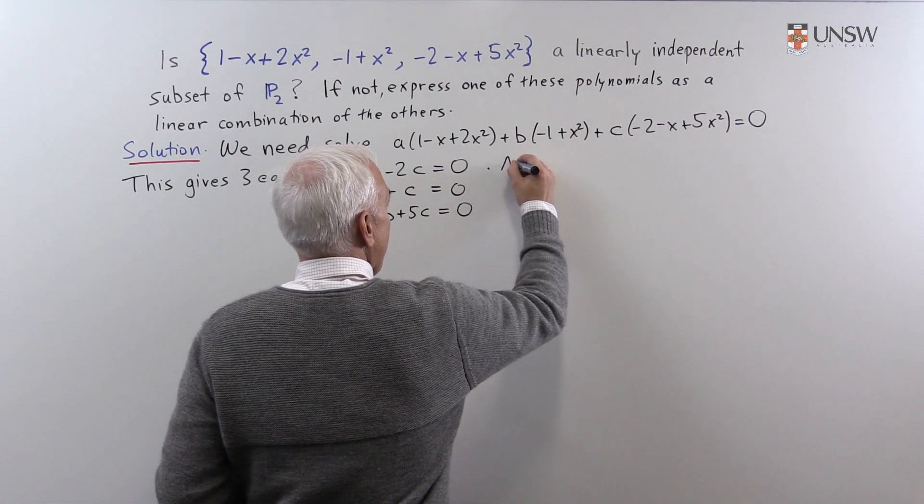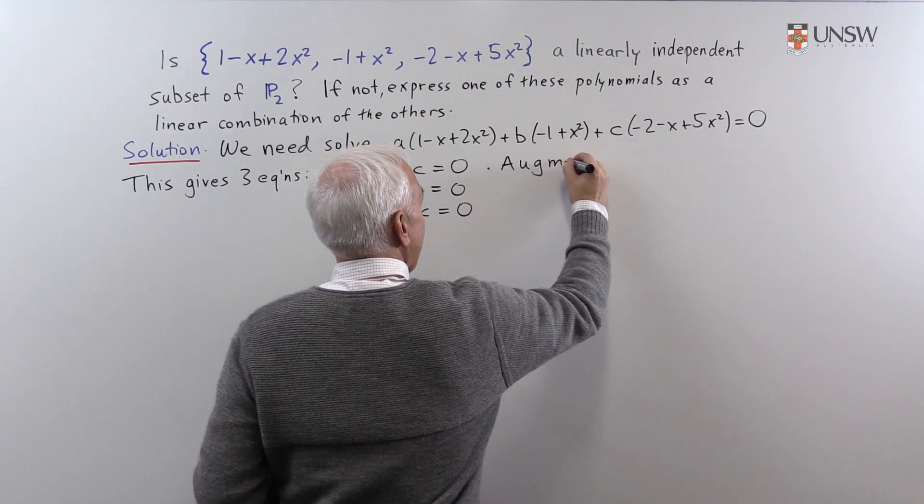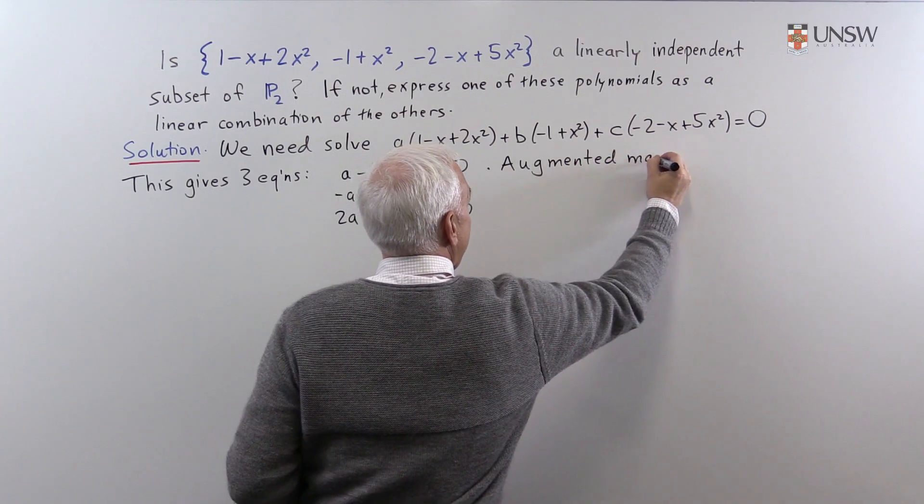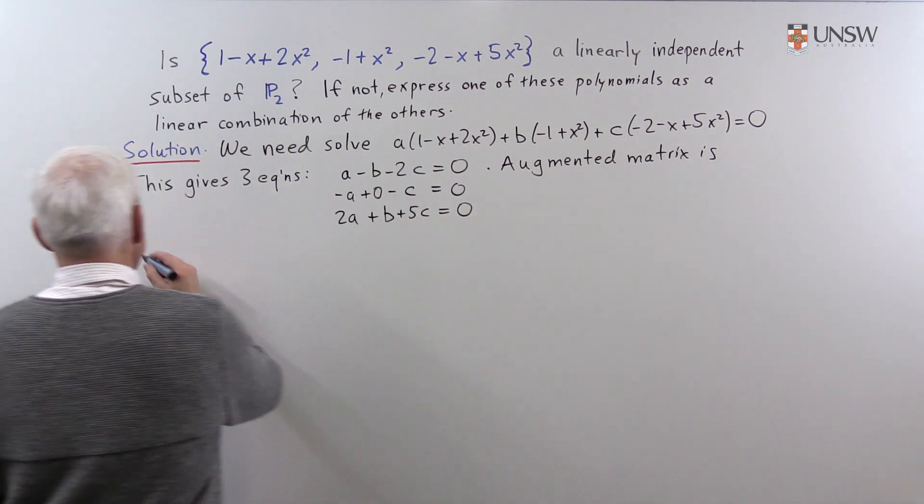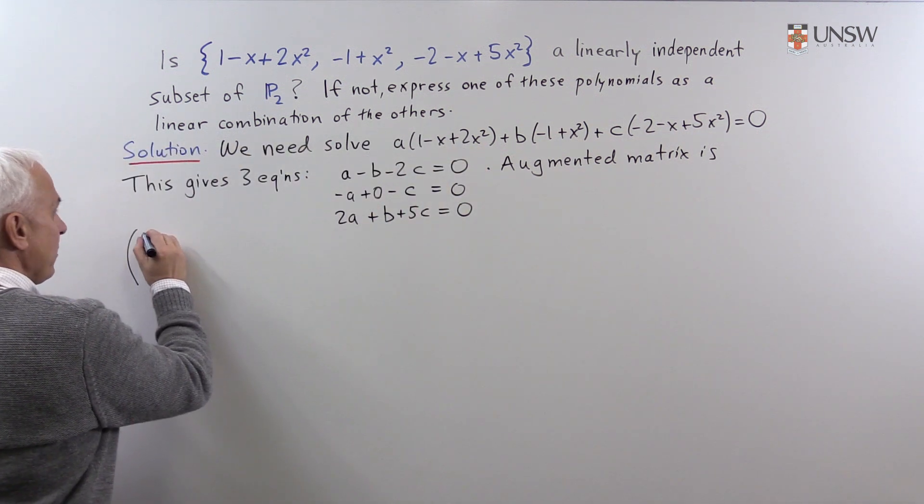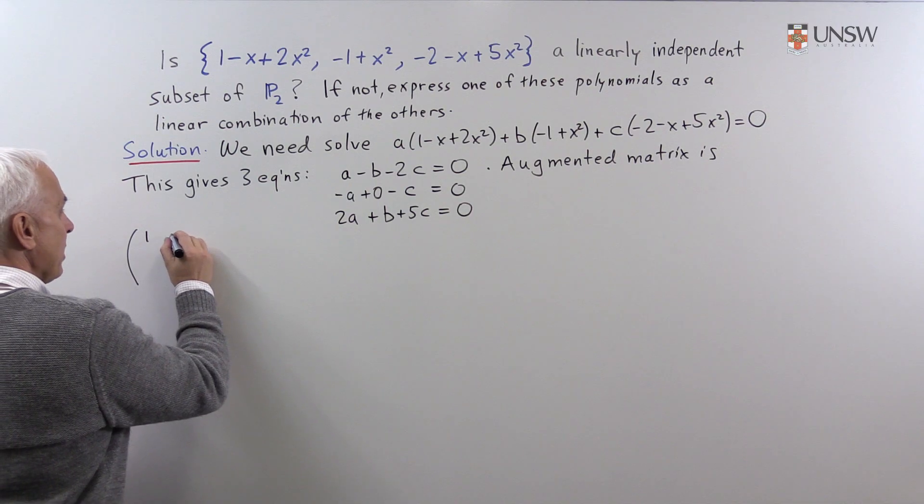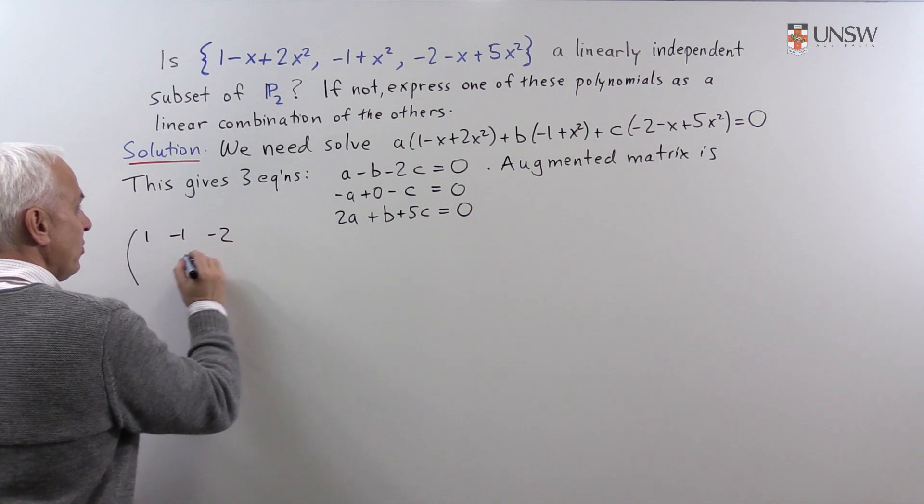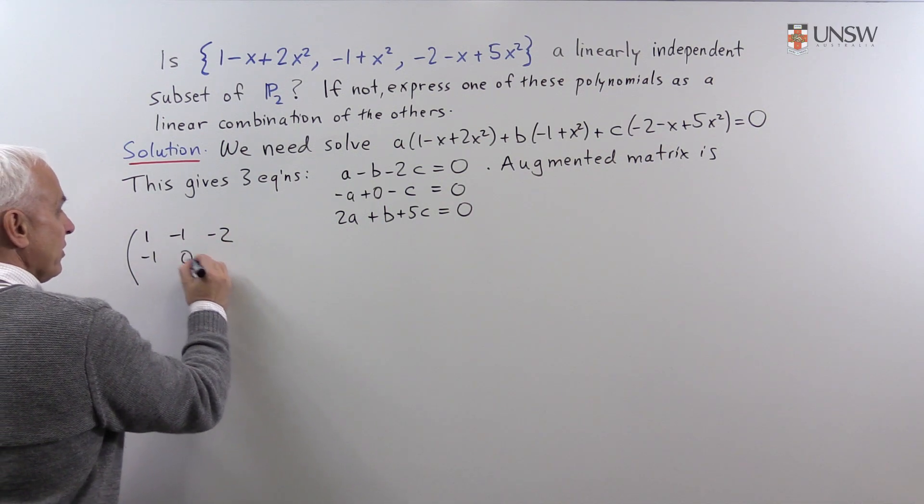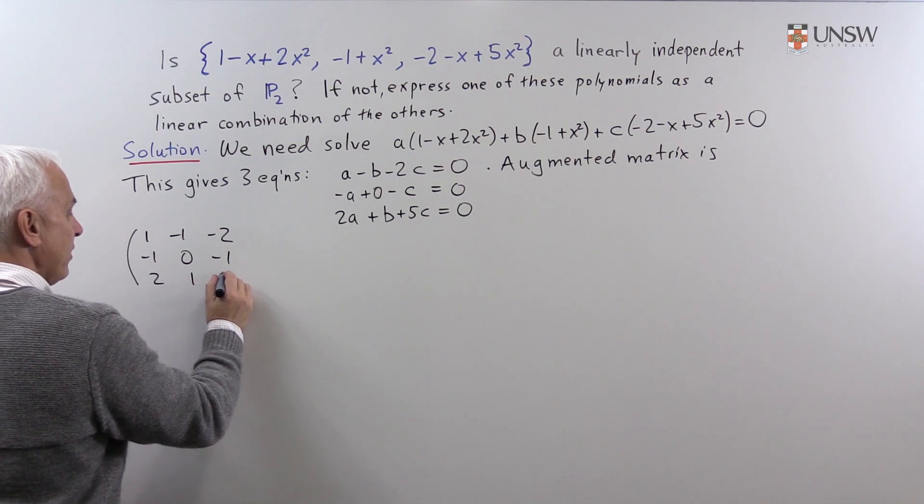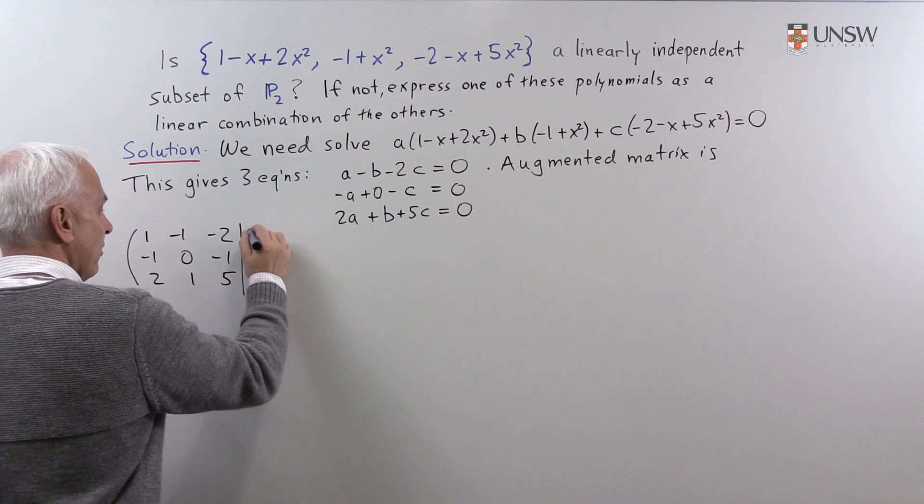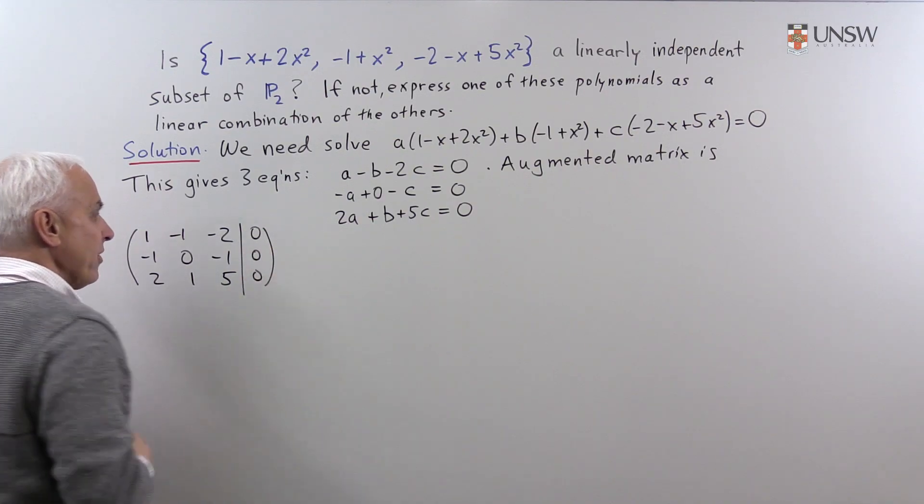So the augmented matrix is, let's go over here, so 1, -1, -2, -1, 0, -1, 2, 1, 5, and row of 0's on the right-hand side.